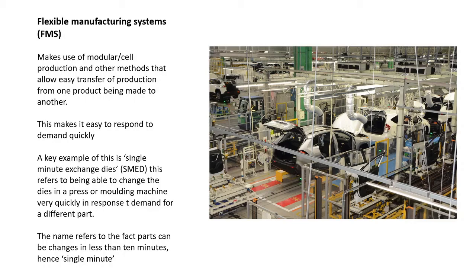Flexible manufacturing systems use the modular or cell production discussed earlier, with CNC machinery doing a lot of the work. The idea is that you can change the product being made quickly depending on demand. Toyota is a key example — they pioneered this and can jump between making different car models depending on order volumes. This involves what's called Single Minute Exchange of Dies (SMED): it should take less than 10 minutes — specifically nine minutes or less — to change the parts on the machines to produce a completely different product.